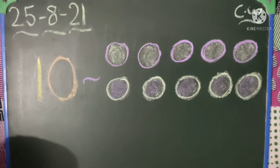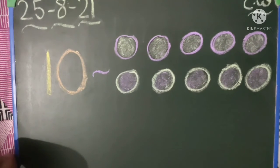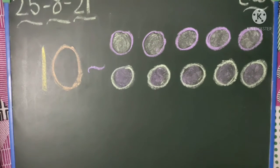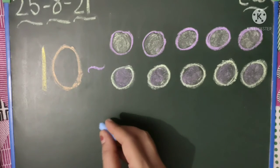Now today is date 25 August 21, okay. And now I will show you the spelling of number 10 that I am telling you, I will write it again and again for you, okay. So let's start.